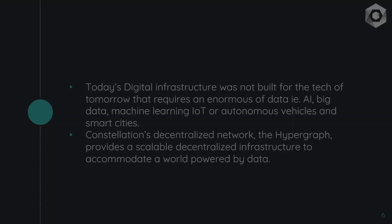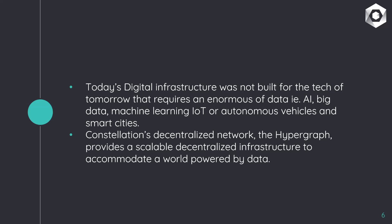Why do we need Constellation? Today's digital infrastructure — including the blockchains that Bitcoin and Ethereum use — wasn't built for the tech of tomorrow. They weren't really built to scale, and that includes industries like AI, big data, machine learning, the internet of things, autonomous vehicles, and smart cities, which all require massive amounts of data to be processed and stored. Constellation's decentralized network, the Hypergraph, provides a scalable decentralized infrastructure to accommodate a world powered by data, because of the way the Hypergraph is structured as a DAG network.